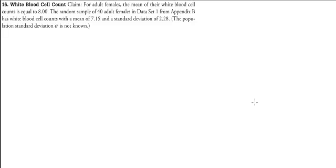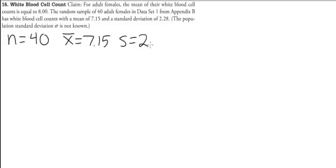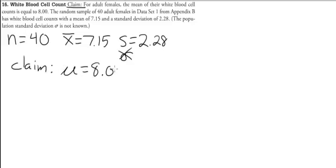The population standard deviation is not known. Let's write down everything we know: sample size n = 40, sample mean x̄ = 7.15, sample standard deviation s = 2.28. You'll notice we didn't write sigma because we don't know the population standard deviation. We also want to identify our claim — the claim is that the average is 8.